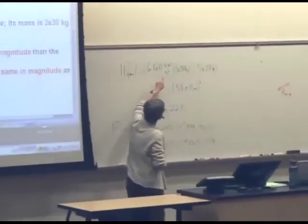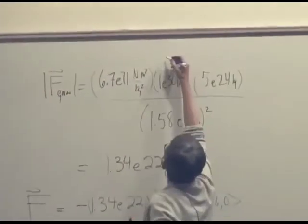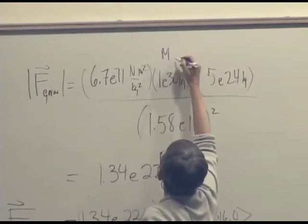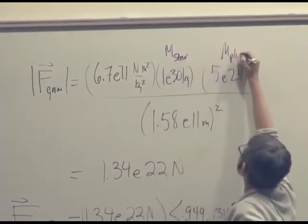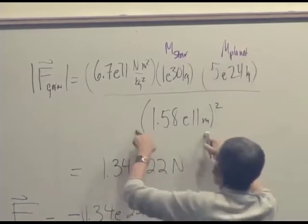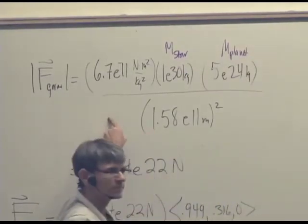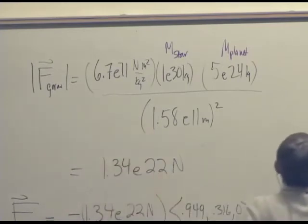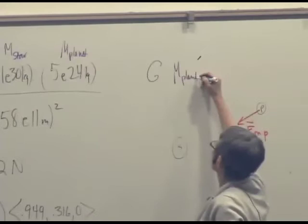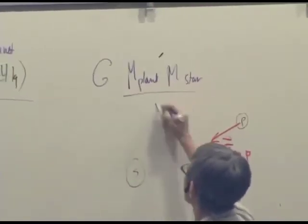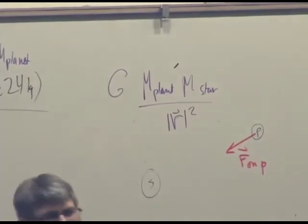It had the gravitational constant. This was the mass of the star. That was the mass of the planet. That was the distance between them. If we do the other calculation, we're going to have G times the mass of the planet times the mass of the star over... The magnitude looks like it's going to be the same.